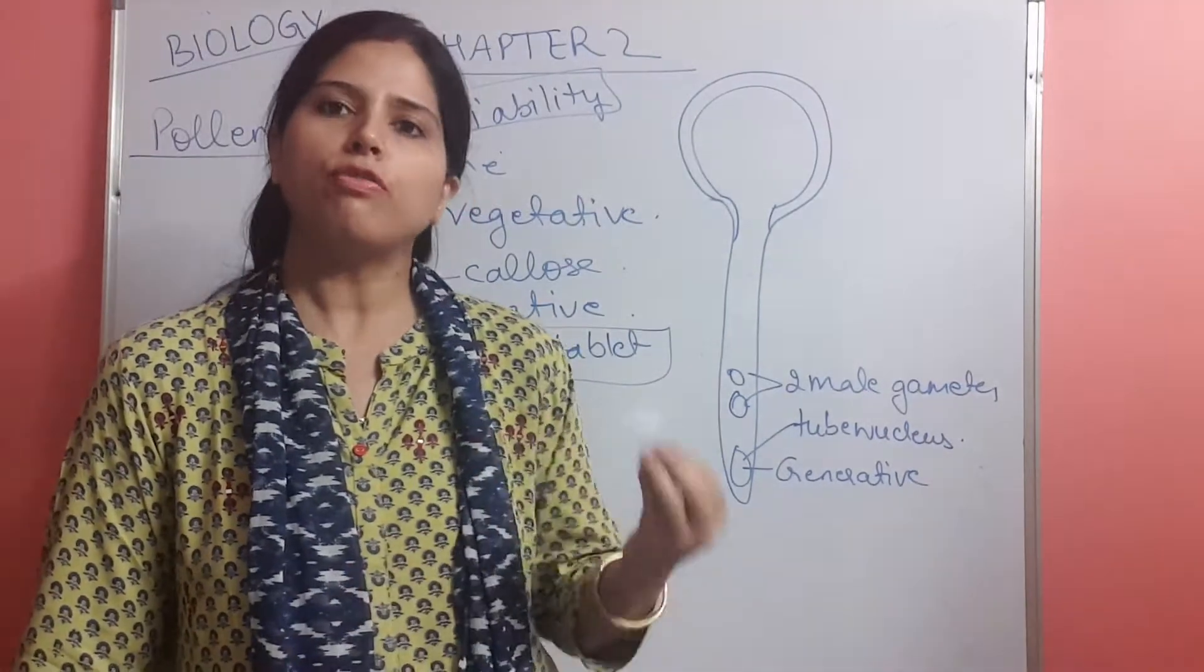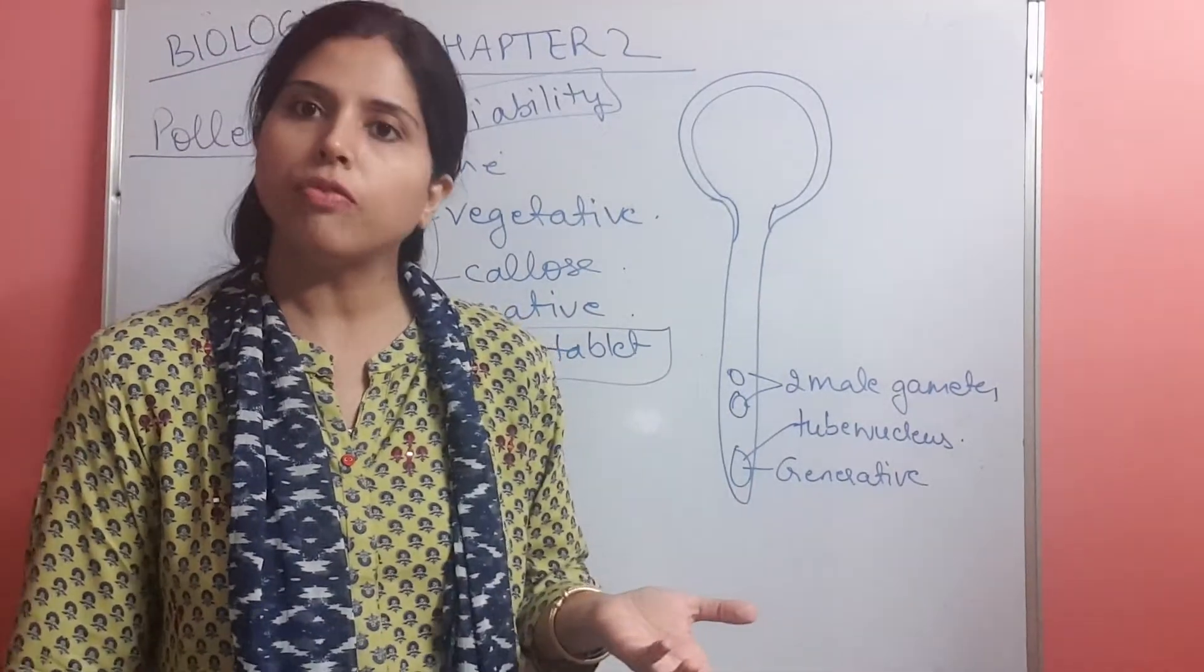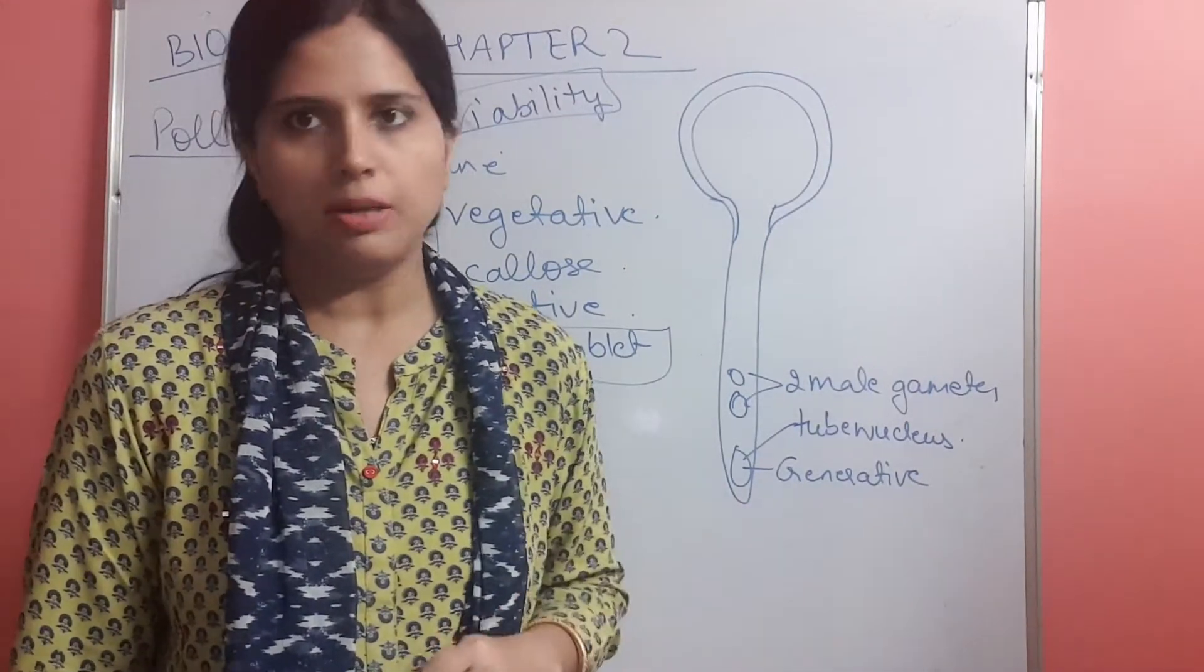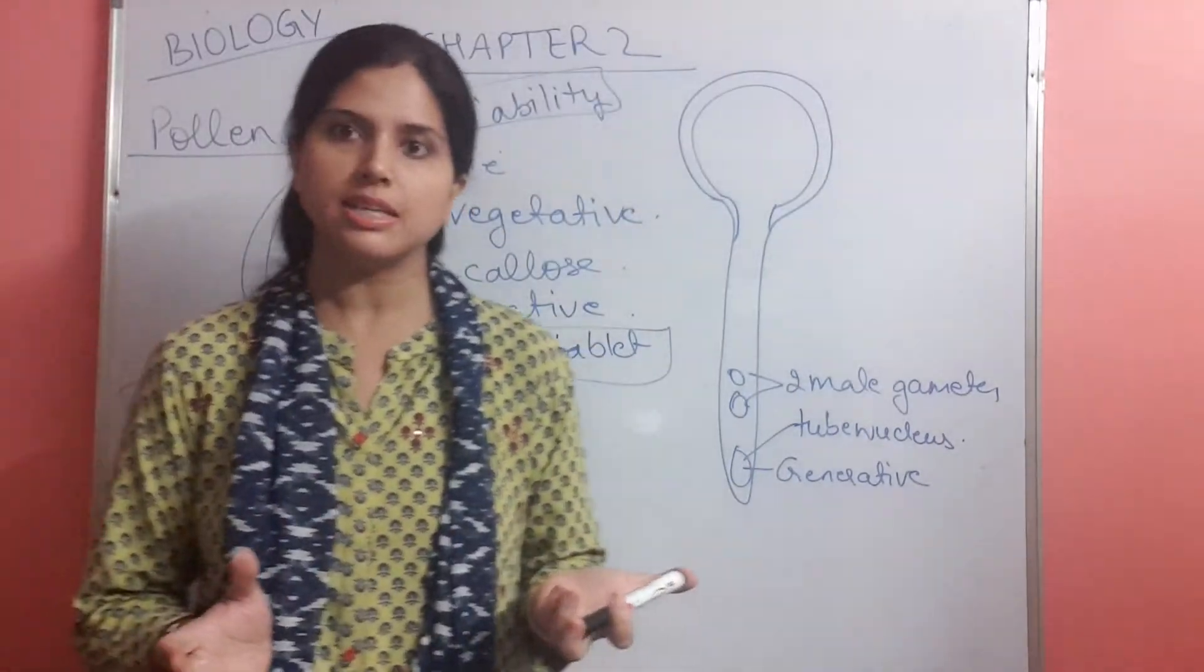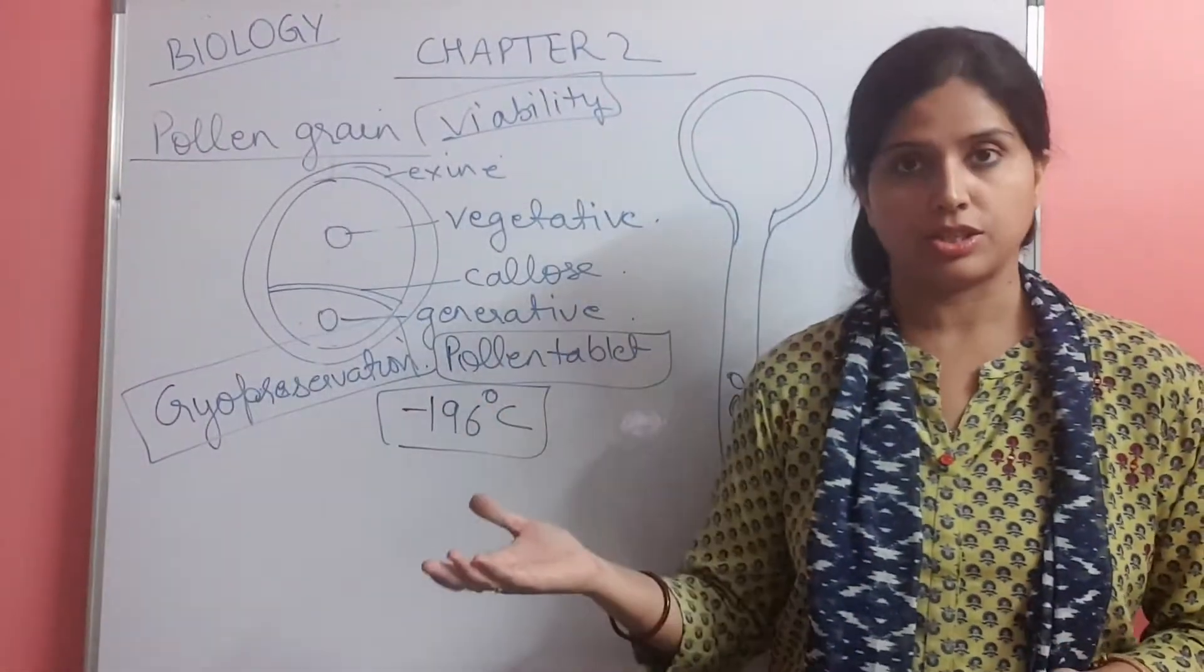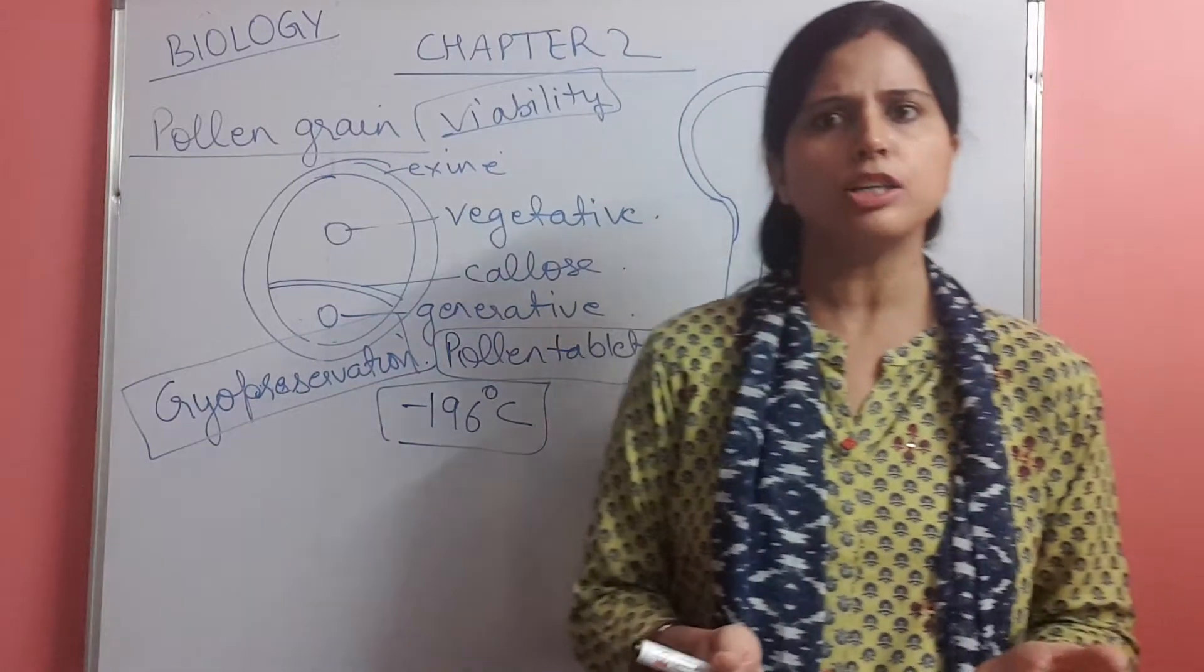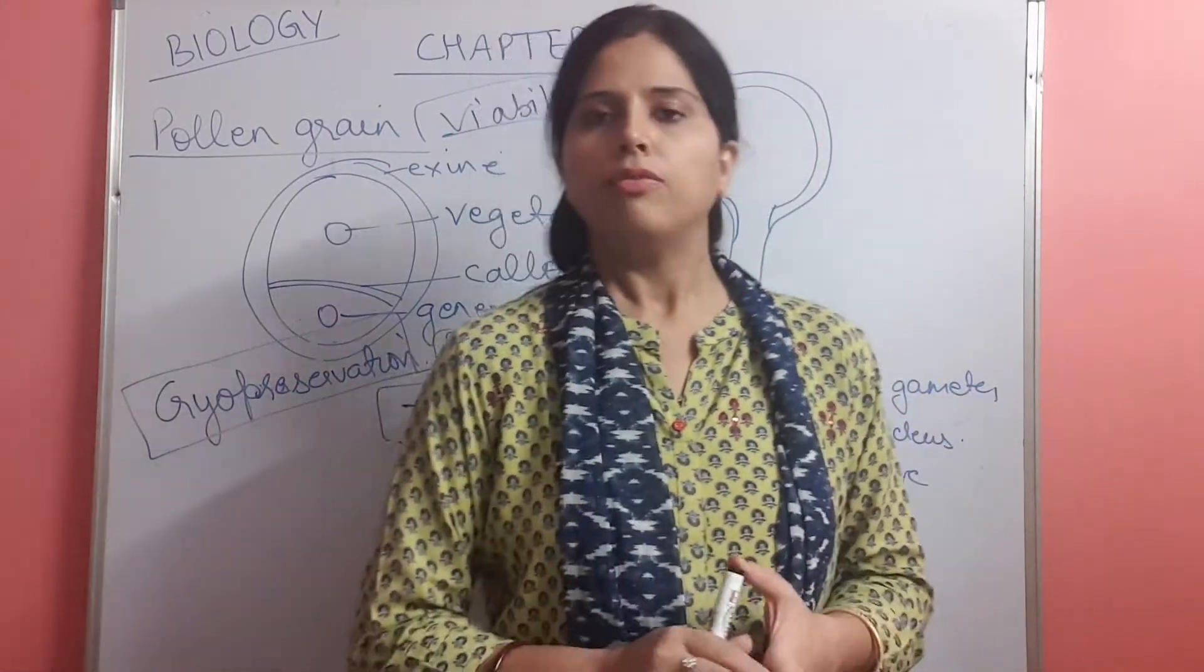Okay, so viability of pollen grain is different for different species. Like suppose rice, wheat, for this the pollen grain viability is 30 minutes. But there are some species, like families of Leguminosae, viability of pollen grain is for months, for three months or so. So viability of pollen grain is different for every plant species. It differs from plant to plant.